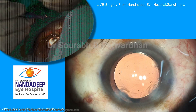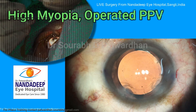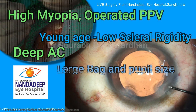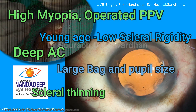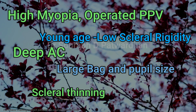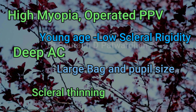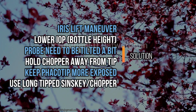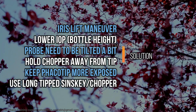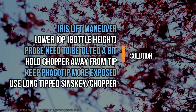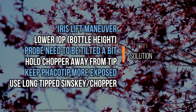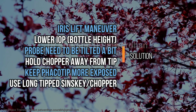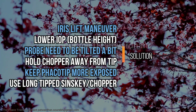So what are the possible risk factors for trampoline cataract? It is commoner with high myopia, post-vitrectomy patients, young age due to scleral elasticity, deep anterior chamber to start with, large axial length, large pupil size, and patients with scleral thinning. The solutions include using the iris lift maneuver for tackling LIDRS, lowering the bottle height, tilting the probe to reach the nucleus, holding the chopper away from the tip, keeping the FECO tip more exposed, and using a long-tipped Sinski or chopper for better reach.